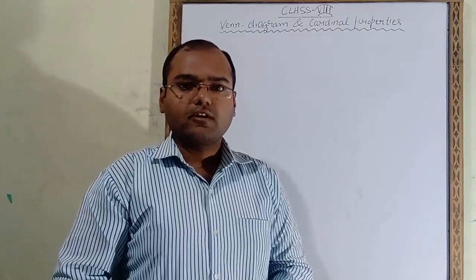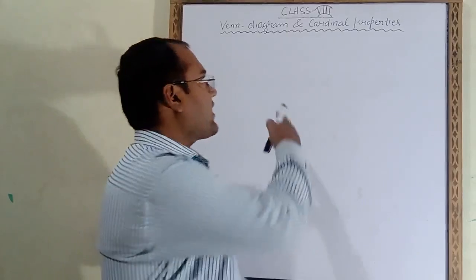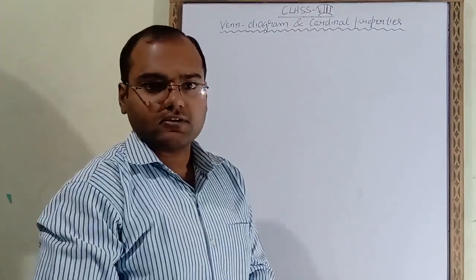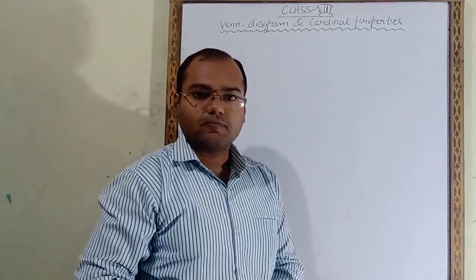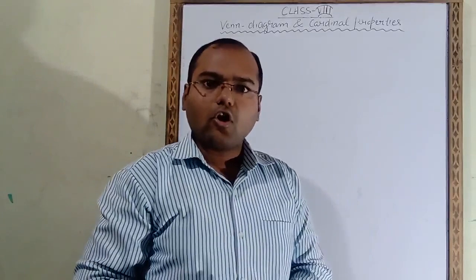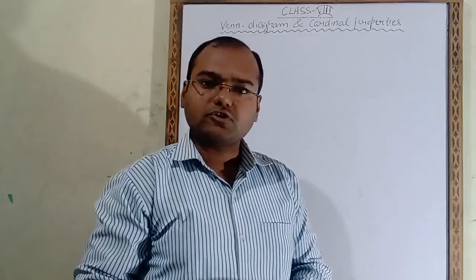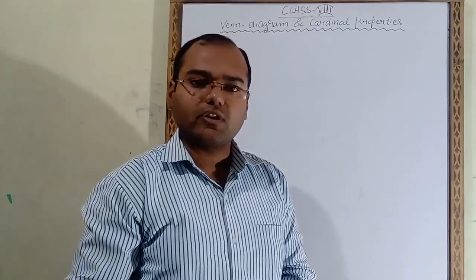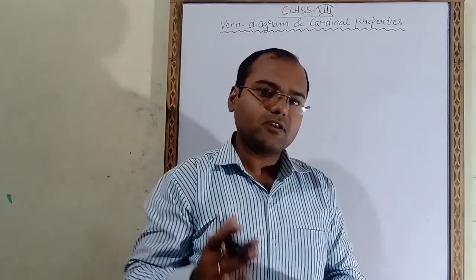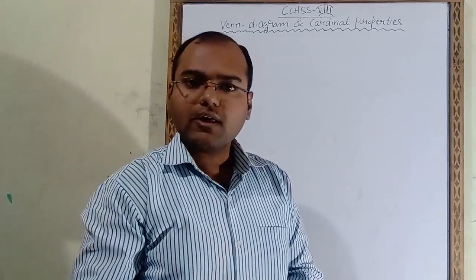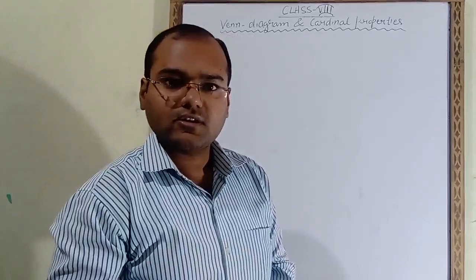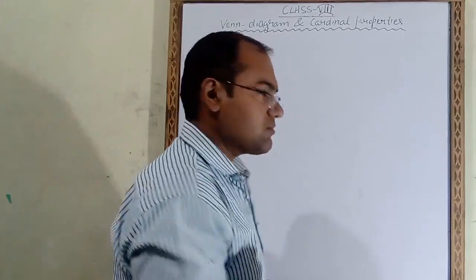Hello everyone. Today's topic is Venn diagram and the cardinal properties of a set. A Venn diagram is a geometrical figure which is used to represent a set, or a figure which is used to show the relationship between two or more than two sets.